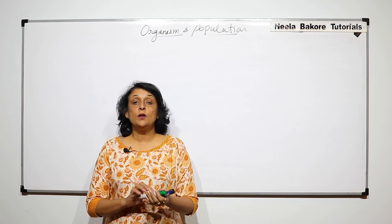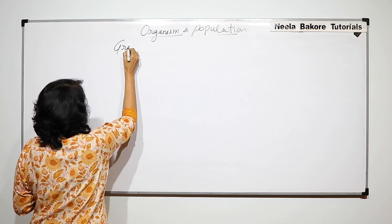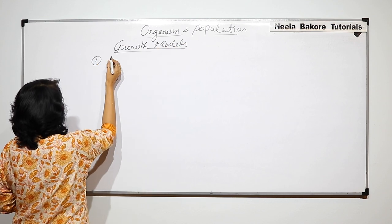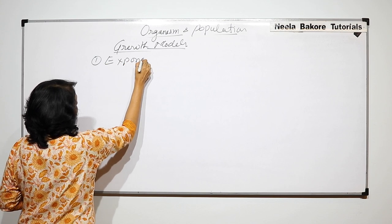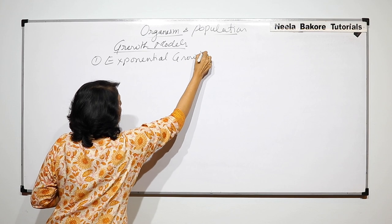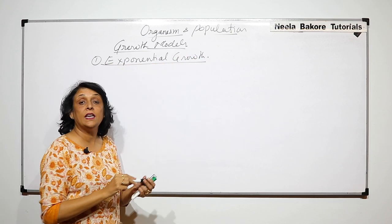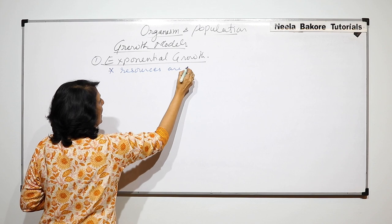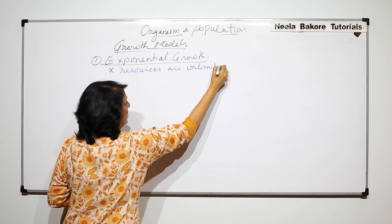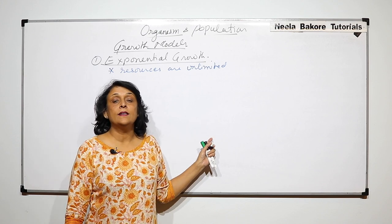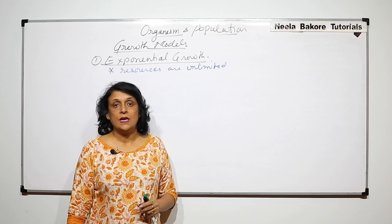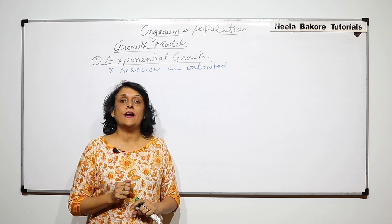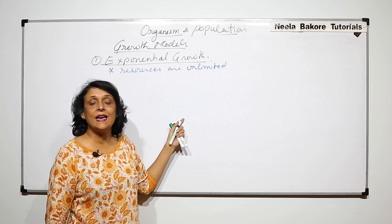In this video we'll talk about growth models. The first one is known as exponential growth. This type of growth is seen when resources are unlimited. We have already discussed that this is not a naturally occurring process in nature — some resource is definitely going to become a limiting factor and will regulate growth.